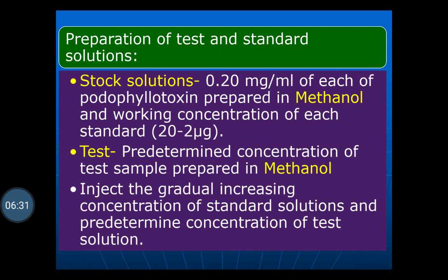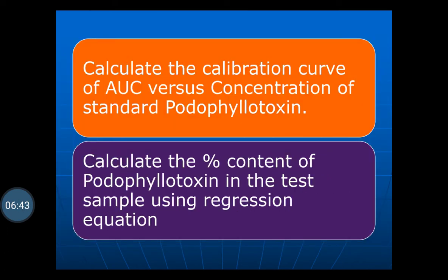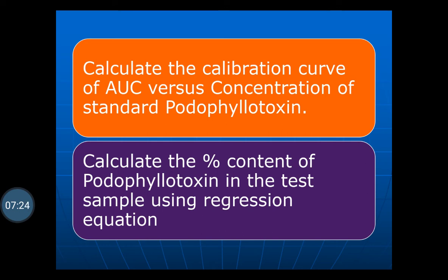The different concentrations of standards are introduced into the HPLC column, then the test solution is introduced. Note down the readings and plot a calibration curve of area under curve versus concentration of standard podophyllotoxin. Calculate the percentage content of podophyllotoxin in the test sample using a regression equation to determine how much podophyllotoxin is present in the extracted sample.